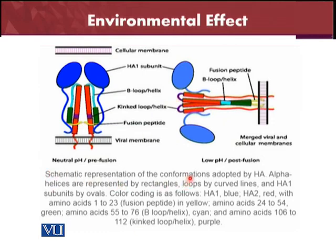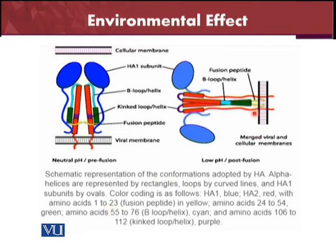The schematic representation shows the conformations adopted by HA. Alpha helices are represented by rectangles, loops by curved lines, and HA1 subunits by ovals. The color coding is as follows: blue for HA1 and red for HA2, with amino acids 1 to 3 as fusion peptides shown in yellow. Amino acids 24 to 54 are shown in green, amino acids 55 to 76 represent the B-loop helix-helix in cyan, and amino acids 106 to 112 are shown in purple.